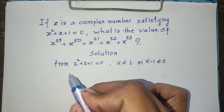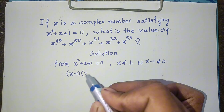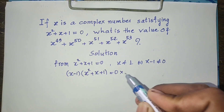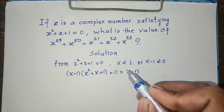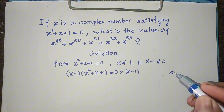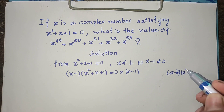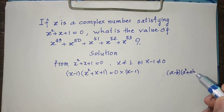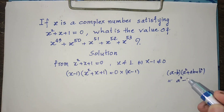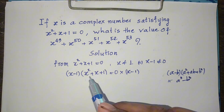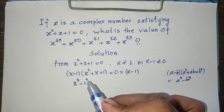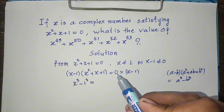Now I multiply both sides of this equation by h minus 1. So we get (h minus 1) multiplied by (h squared plus h plus 1) equals 0 multiplied by (h minus 1). This gives us h cubed minus 1 equals 0.